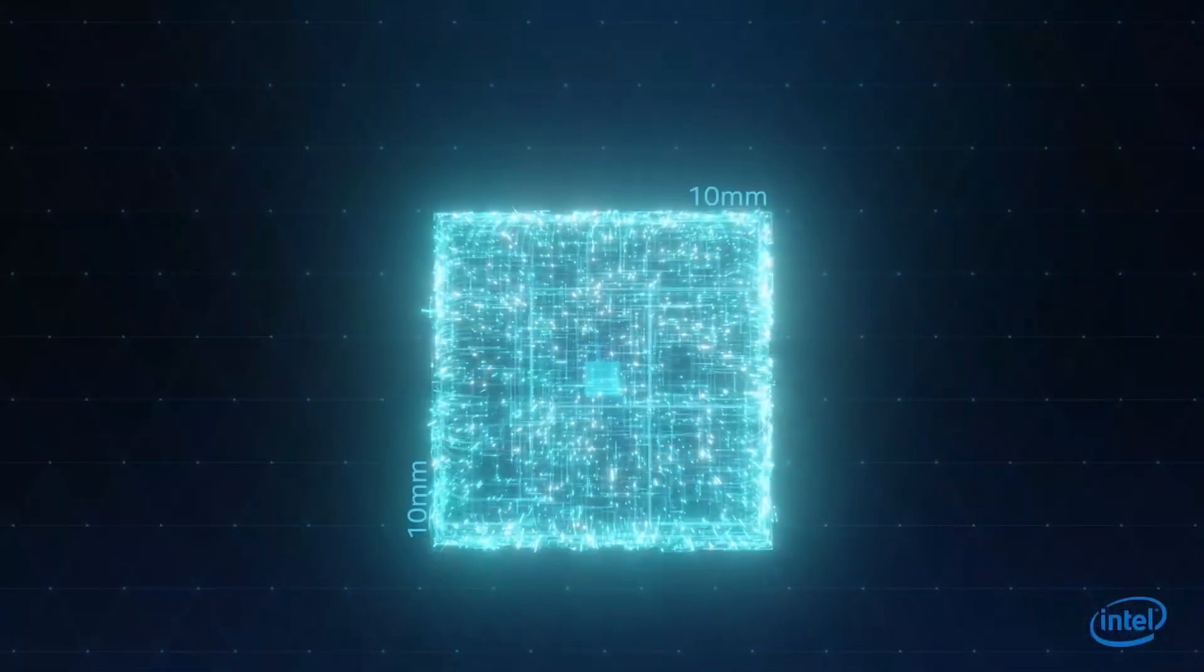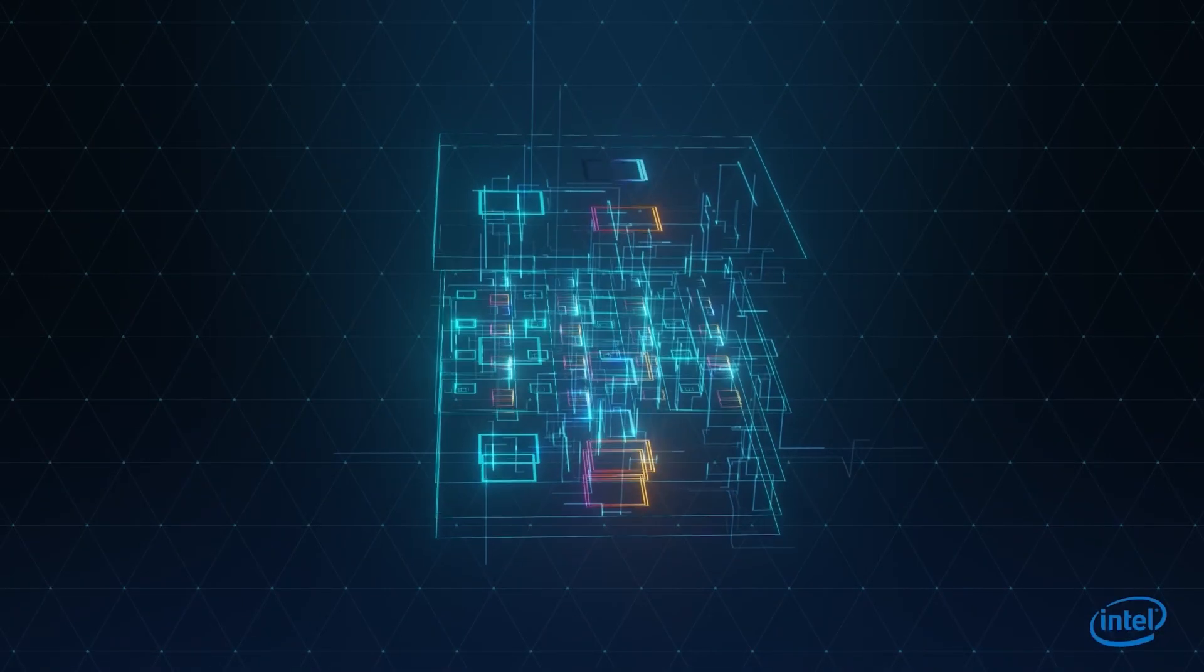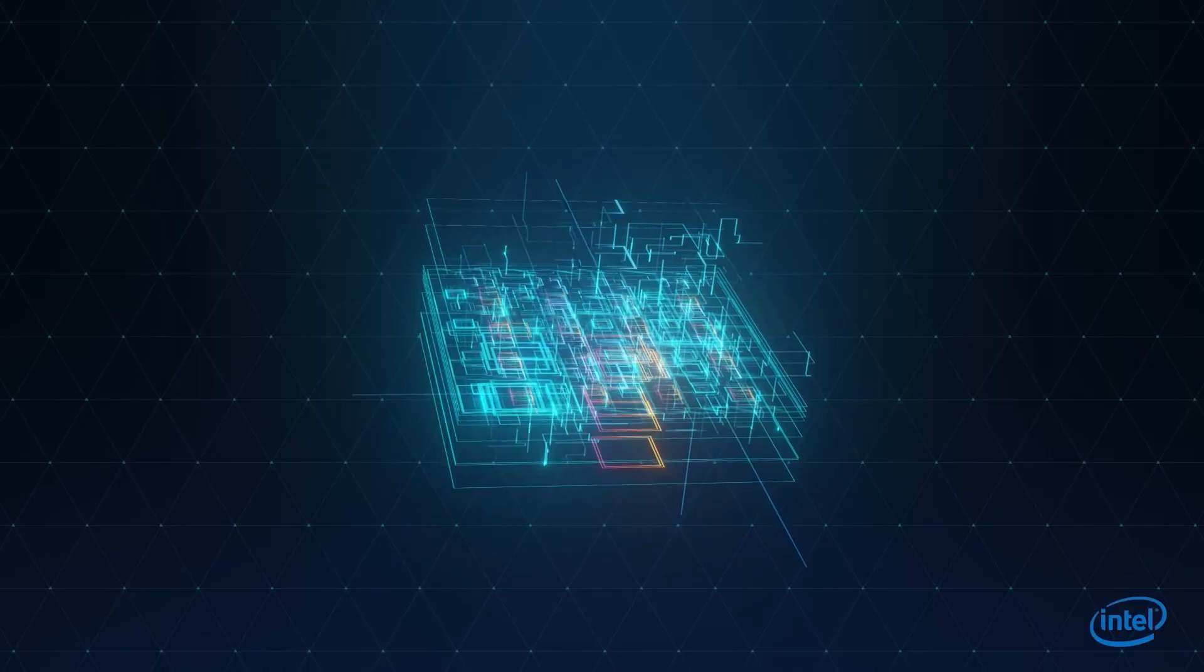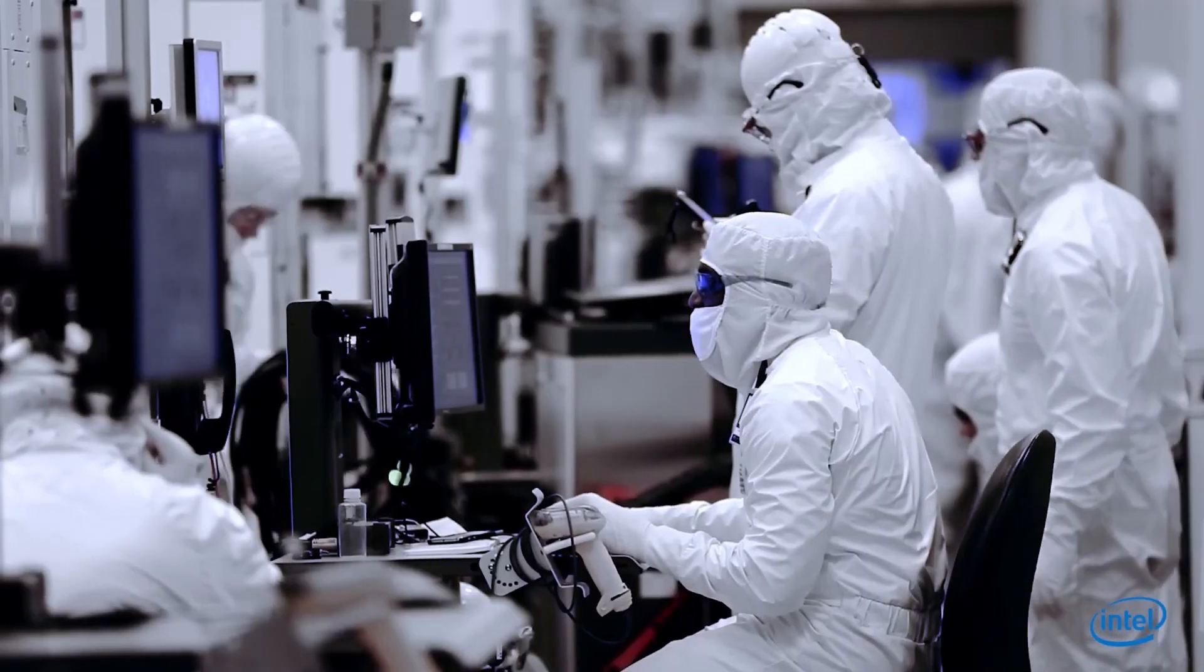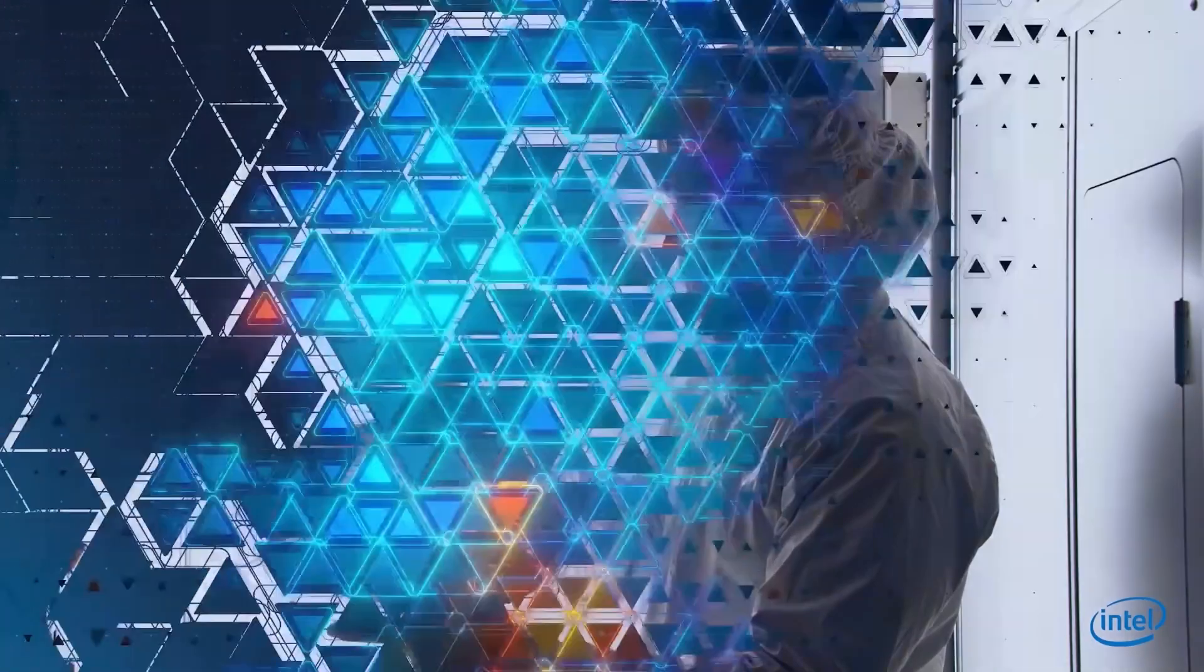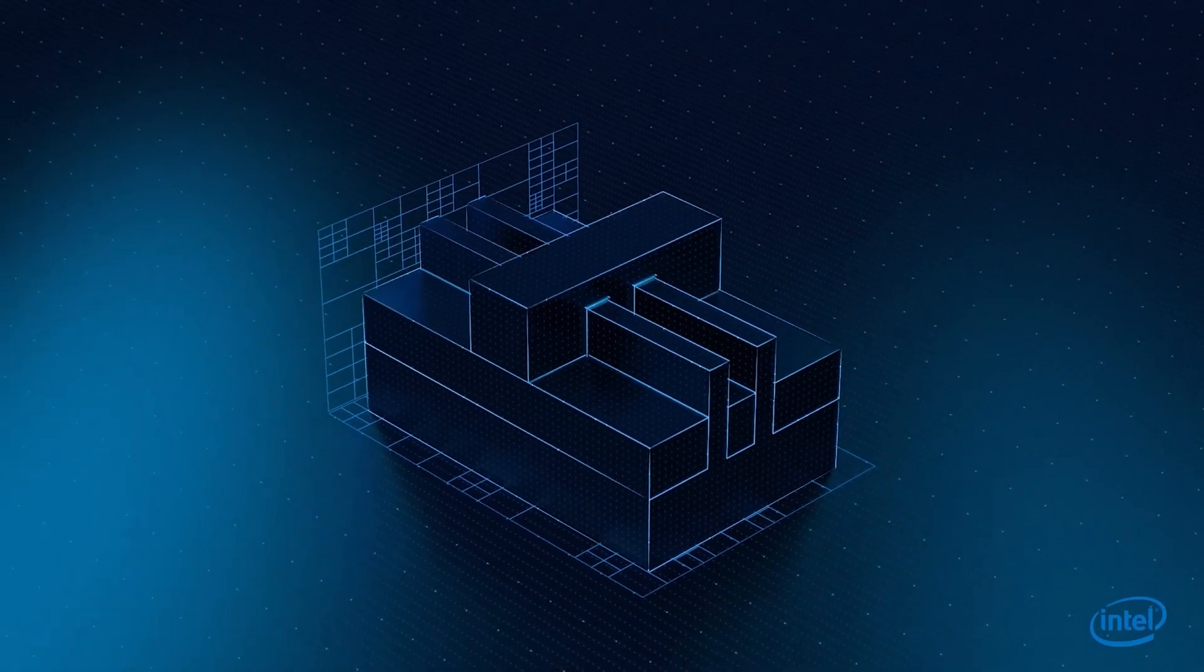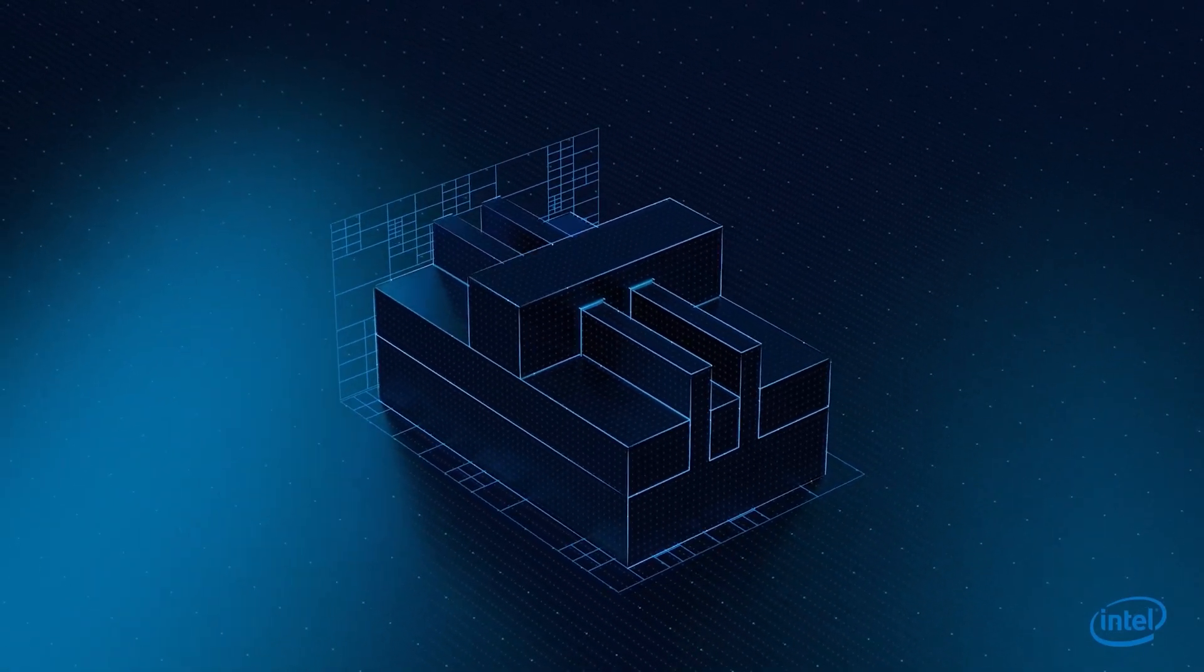Superconducting quantum computers are one of the types of quantum computers that most closely resemble a classical computer. These are chips made in a nanofabrication facility, much like the computer chips that you use in your laptop, phone, desktop, or whatever. That said, there are some important differences between a classical computer chip and a superconducting qubit chip.